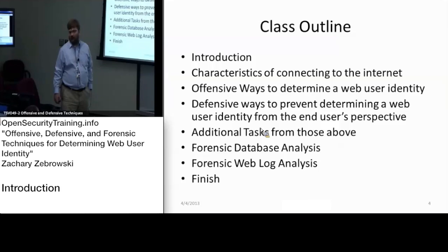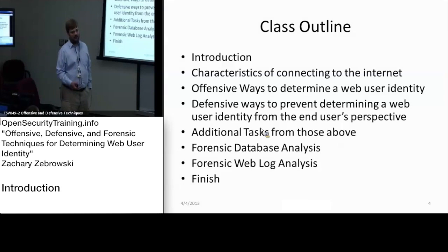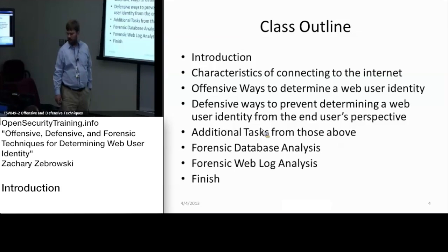We'll then look at defensive ways of basically preventing people from being able to identify where you're coming from. In this case, what we mean is basically borrowing a neighbor's Wi-Fi connection — that type of stuff — so you can't immediately attribute where you are physically to your location.